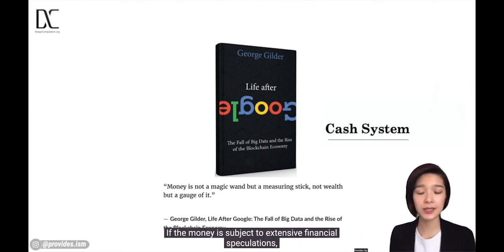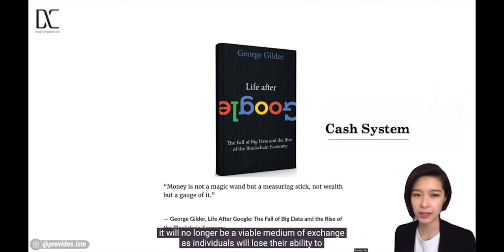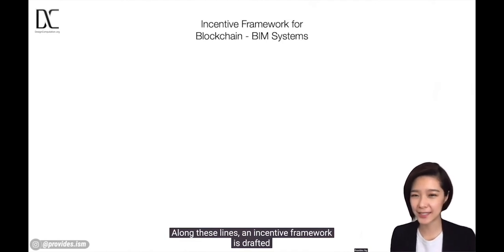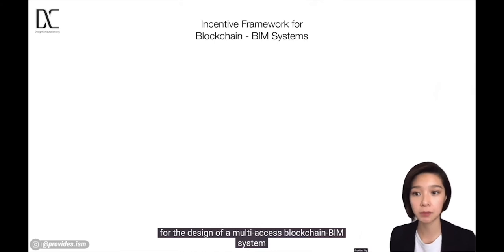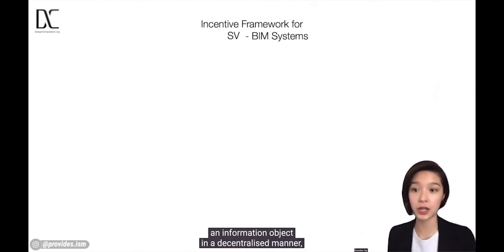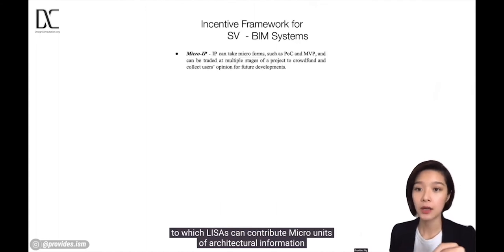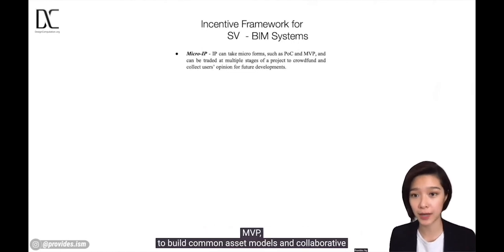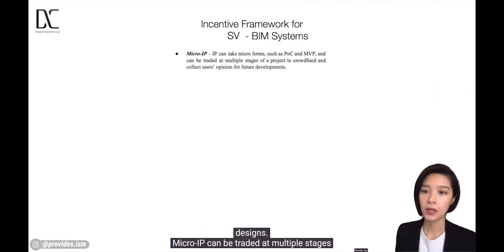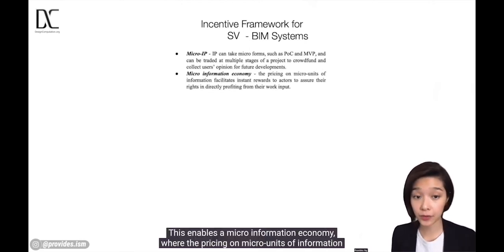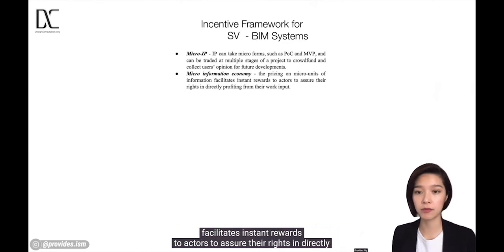Along these lines, an incentive framework is drafted for the design of a multi-access blockchain BIM system, which I call an SVBIM system. SVBIM aims at helping to form consensus around an information object in a decentralized manner, to which leases can contribute micro-units of architectural information to accelerate peer-to-peer exchanges — contributing micro-IPs such as proof-of-concept or minimal viable products to build common asset models and collaborative designs. Micro-IP can be traded at multiple stages of a project to crowdfund and collect users' opinions for future developments — a micro-information economy where the pricing on micro-units of information facilitates instant rewards to content creators to assure their rights in directly profiting from their work input.